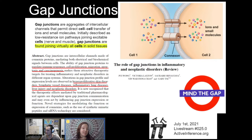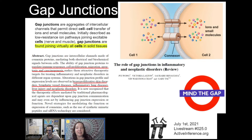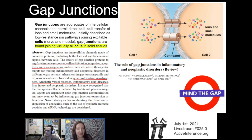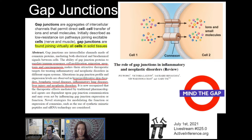Gap junctions are something near and dear to my heart with my neuroscience background. Gap junctions were originally attributed to neurons — facilitating electrical signaling between neural cells. But really they're channels that permit cell-to-cell transfer of ions directly. They were originally described in nerve and muscle, but they're found in virtually all cells present in solid tissues. A recent review shows they're involved in all kinds of things: cell proliferation, immune response, migration, apoptosis, carcinogenesis, hyperproliferative skin disorders, lymphatic vessel diseases, inflammatory lung diseases like asthma, liver injury, and neoplastic disorders — also cancer.